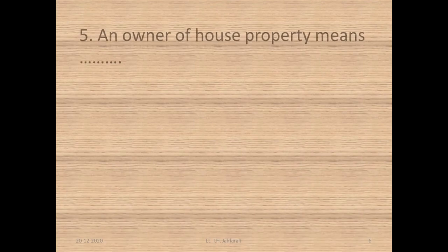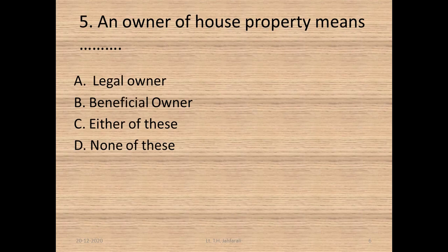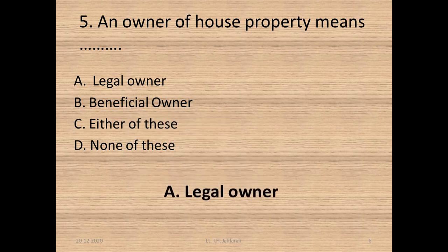Question 5: An owner of house property means — A. Legal owner, B. Beneficial owner, C. Either of these, D. None of these. Option A: Legal owner.